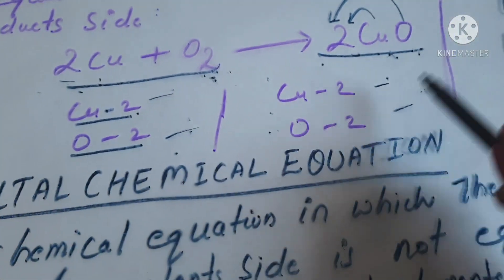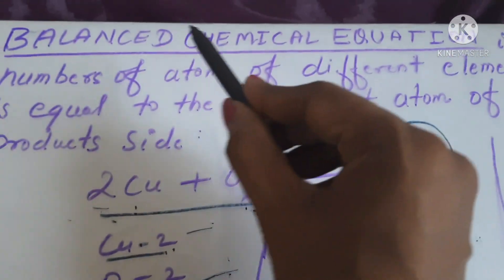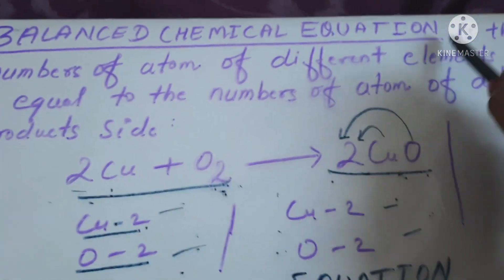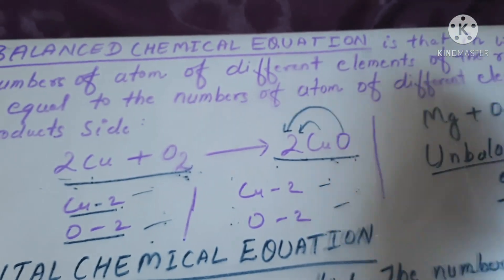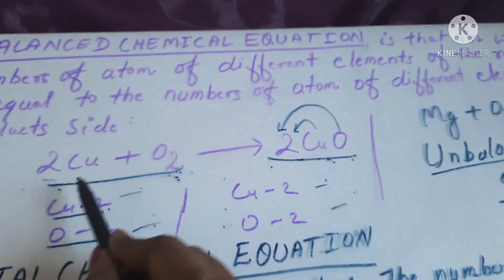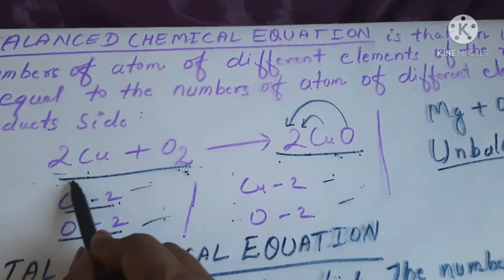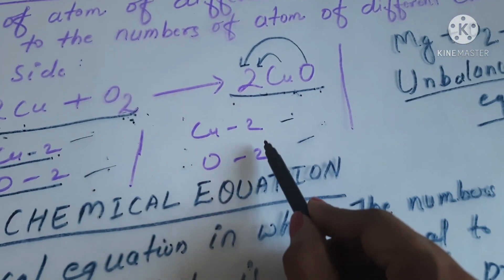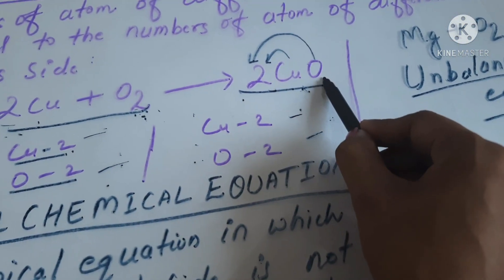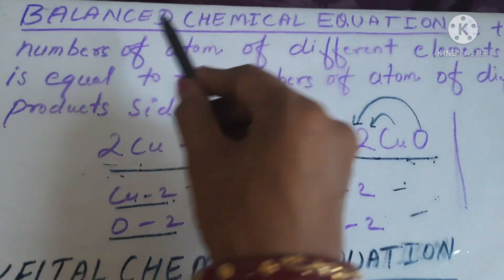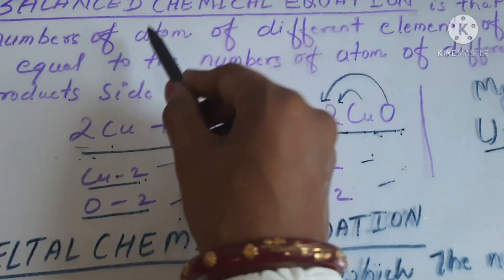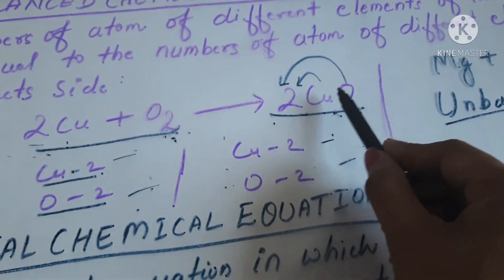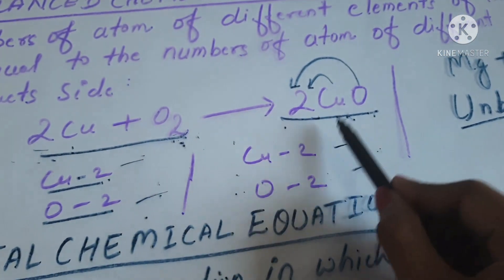On this basis, we can define a balanced chemical equation like this: a balanced chemical equation is one in which the number of atoms of different elements on the reactant side is equal to the number of atoms of different elements on the product side.